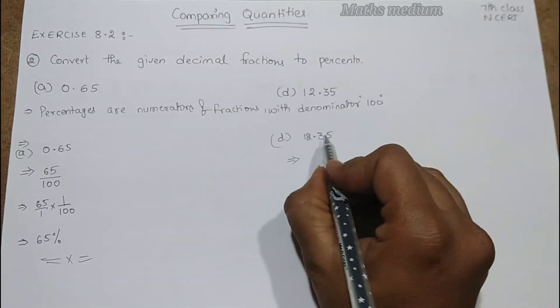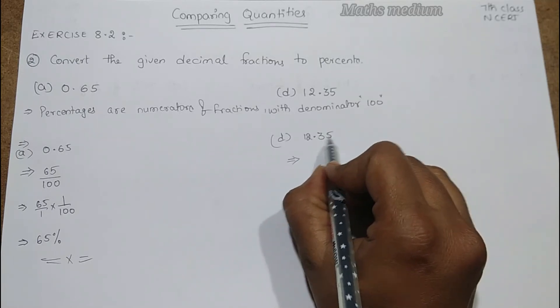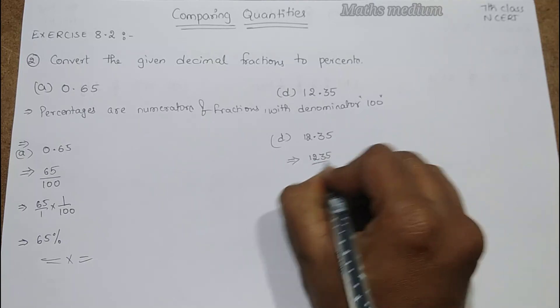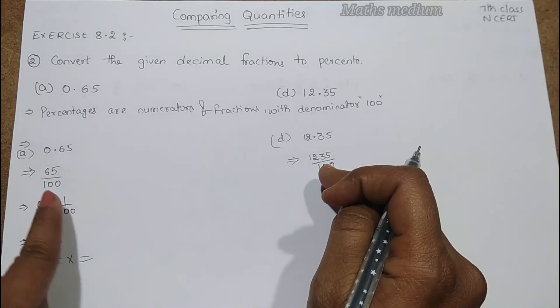Now this is also after point we have two numbers. It means it is divided by 100. Similar to this one.